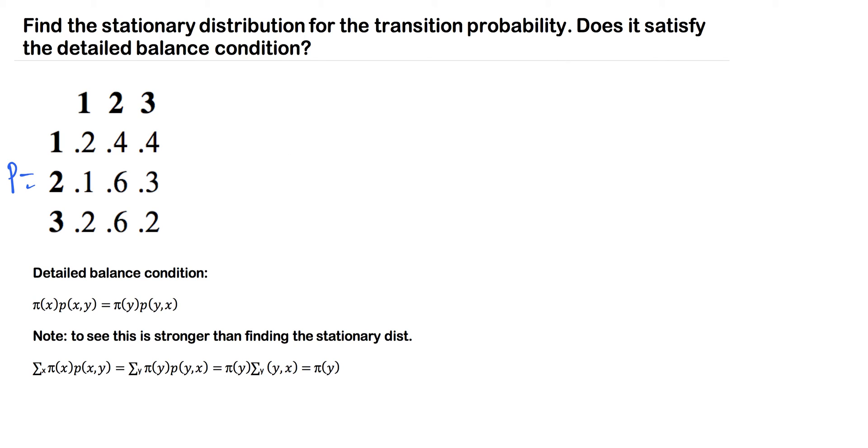Find the stationary distribution for the transition probability. Does it satisfy the detailed balance condition? Now the important part here is the detailed balance condition, and we're going to unravel this in a second.